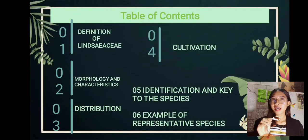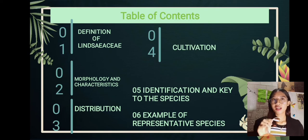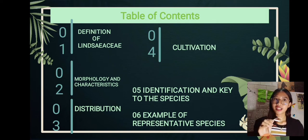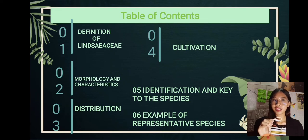Here are the table of contents: the definition of Linsaeaceae, morphology and characteristics, the distribution, cultivation, the identification and key to the species, and the examples of representative species.